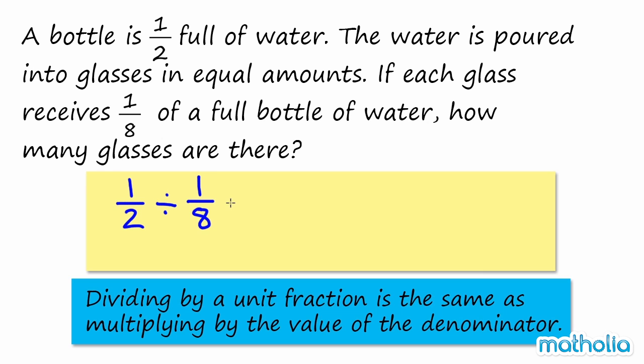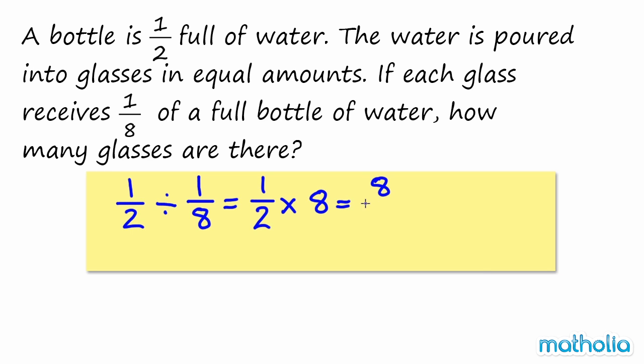Recall that dividing by a unit fraction is the same as multiplying by the value of the denominator. One half divided by one eighth is equal to one half multiplied by eight. Eight halves is equal to four. So there are four glasses.